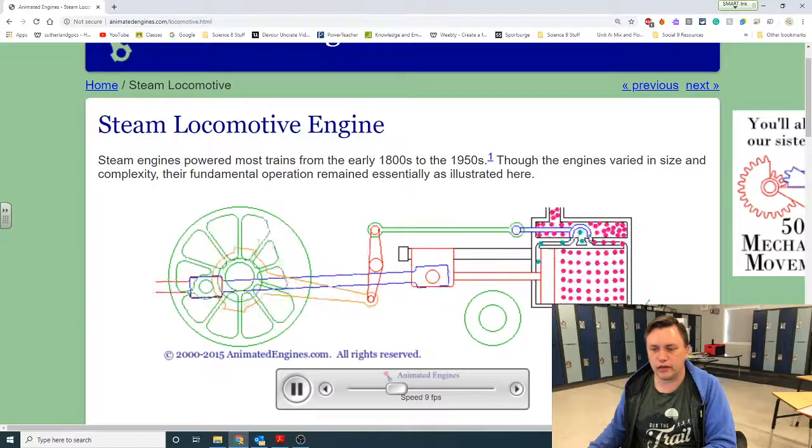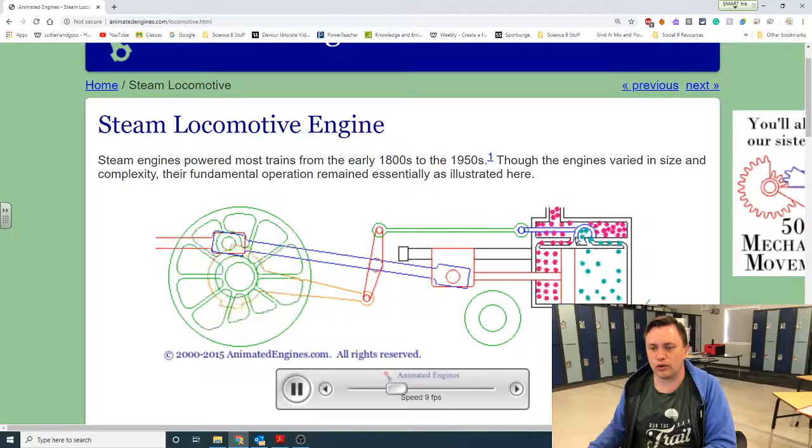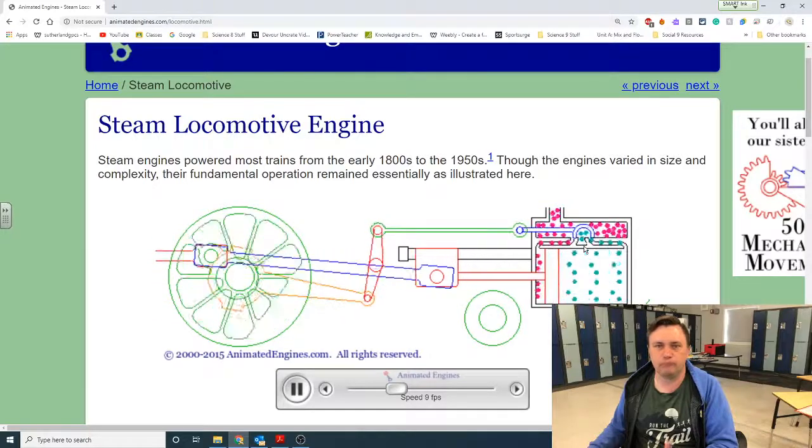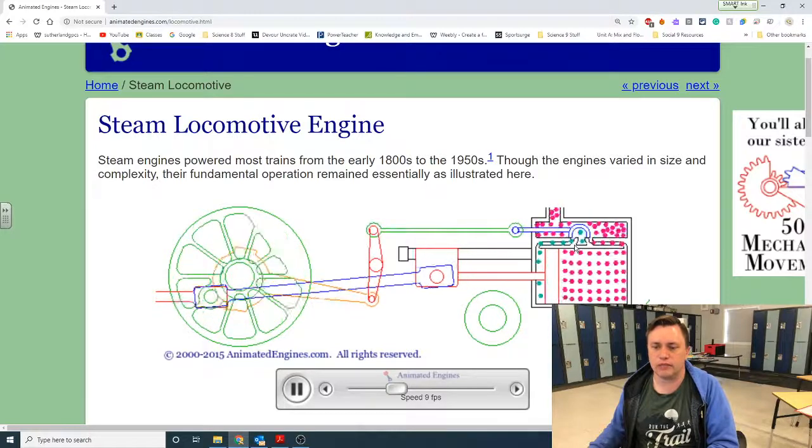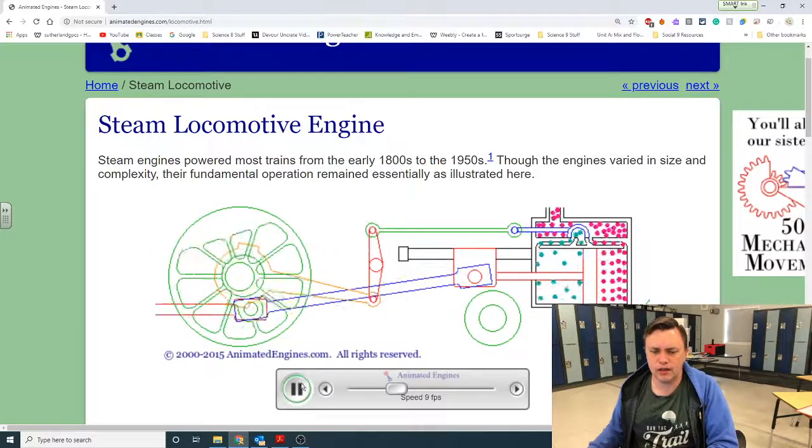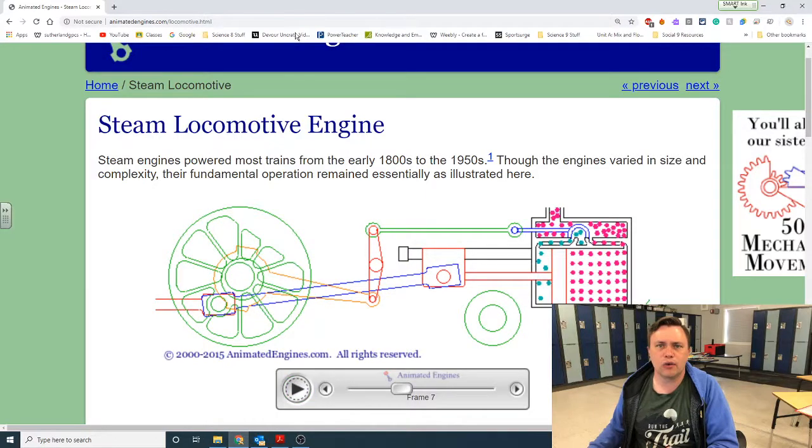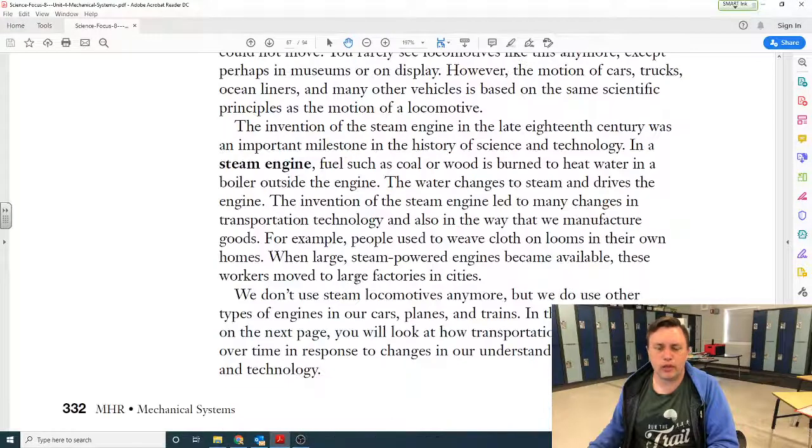As it oscillates back and forth, this little covering going back and forth allows the steam that is in this compartment to go and the cooler, more dense, cooler steam to escape as the hotter steam comes in and pushes it.